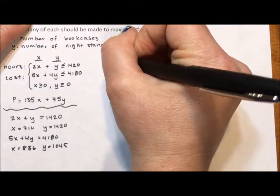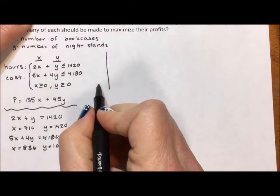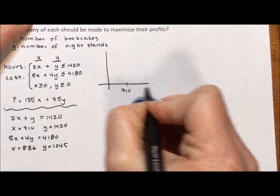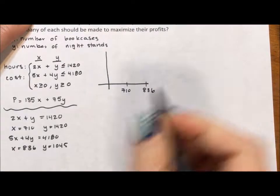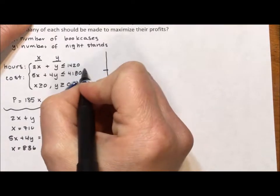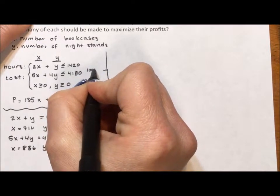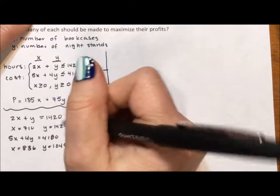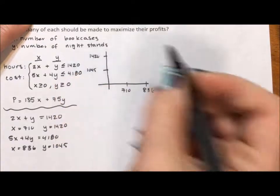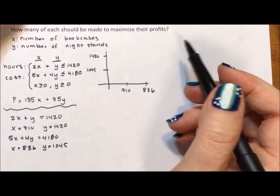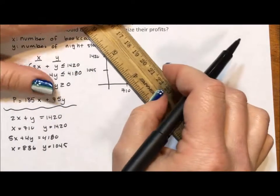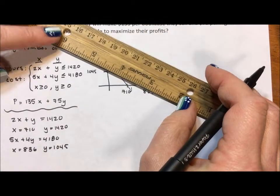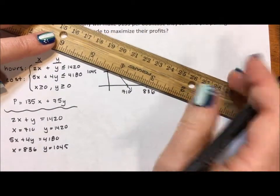So my basic sketch of my situation. My x intercepts are 710 and 836. My y intercepts are 1045 and, sorry, 1420. And the 710 and the 1420 connect together. And the 1045 and the 836 connect together.